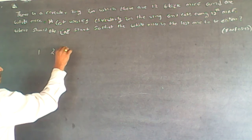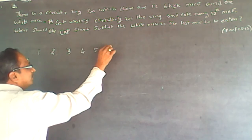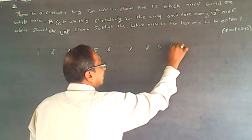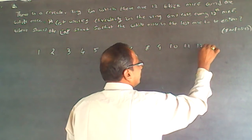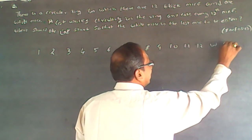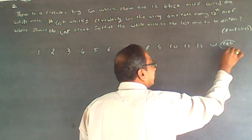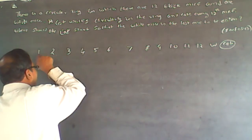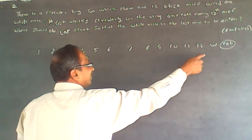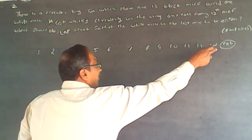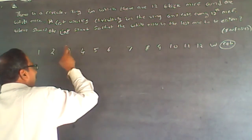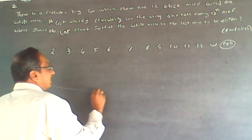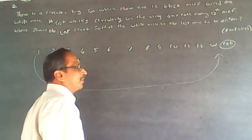I number the mice 1, 2, 3, 4, 5, 6, 7, 8, 9, 10, 11, 12, and then white. I am writing them in a straight line. The cat starts from one end and goes along — it is a circle, but I am not drawing a circle because it will be difficult on the board. When moving, I will come back to the start and continue, making it a circular loop.